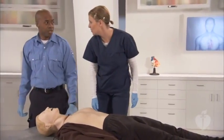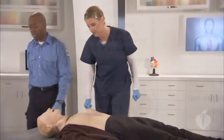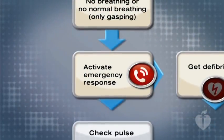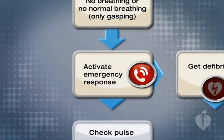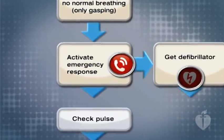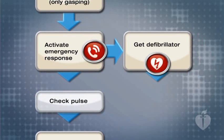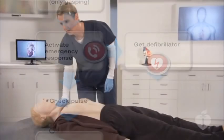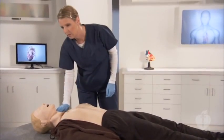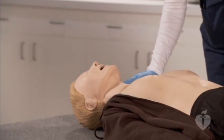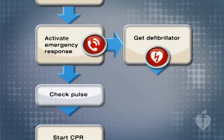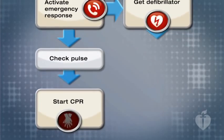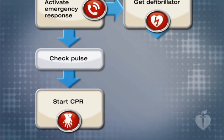Activate the emergency response system and get an AED. If the patient is unresponsive, move to step two: activate the emergency response system and get an AED. Step three: circulation. Check the carotid pulse. Do not spend more than 10 seconds checking for a pulse. If you cannot feel a pulse within 10 seconds, start CPR.